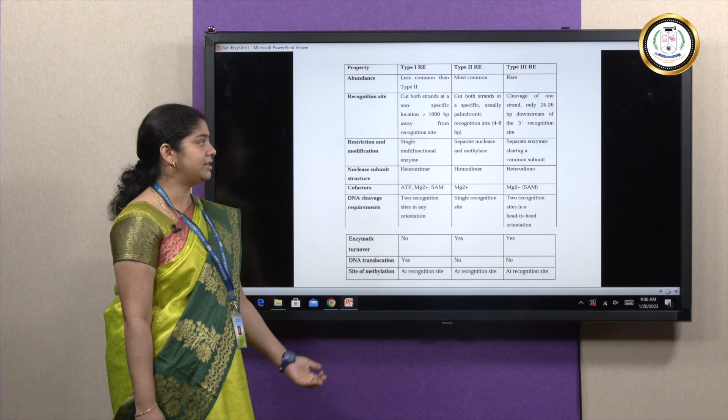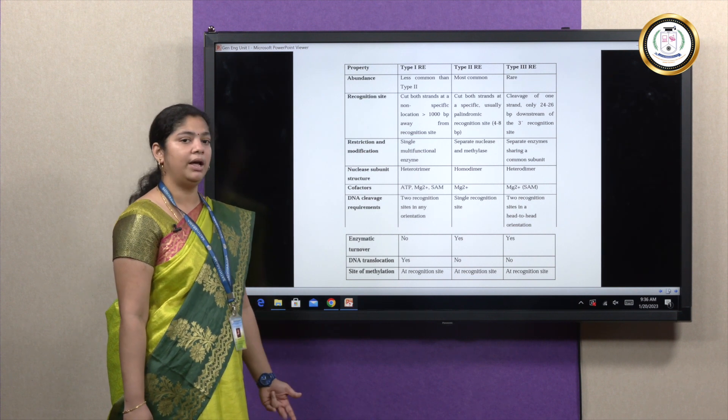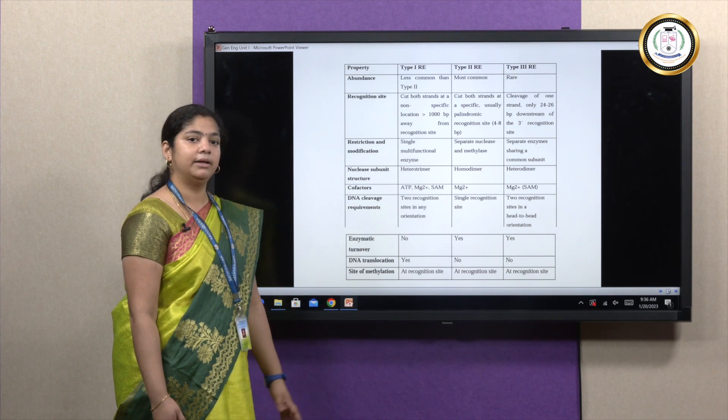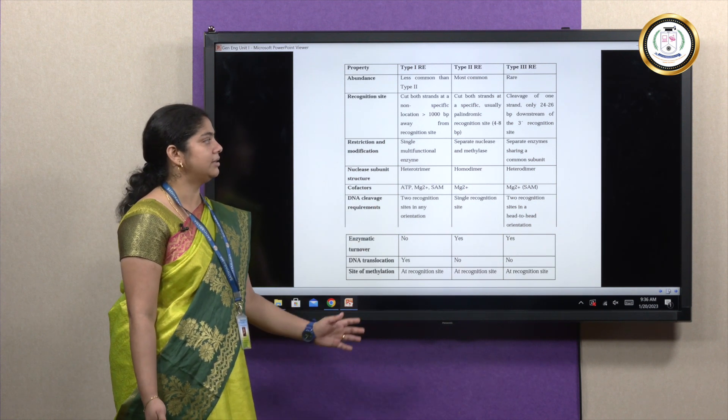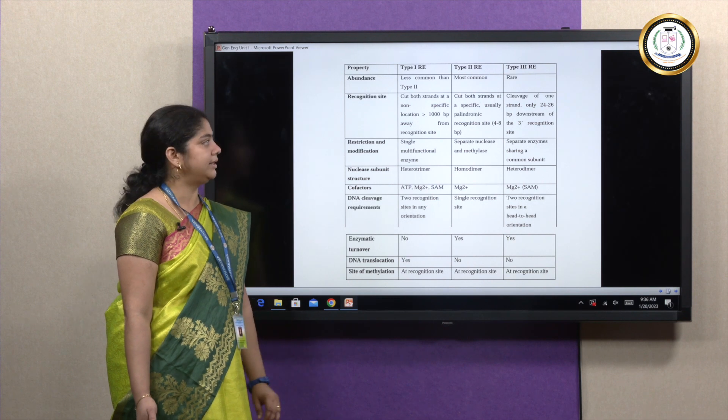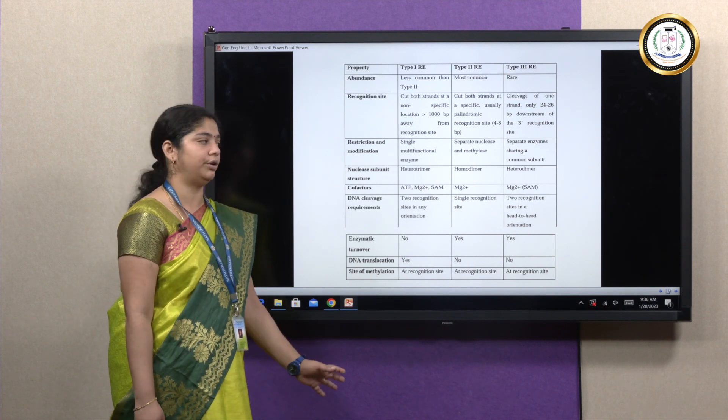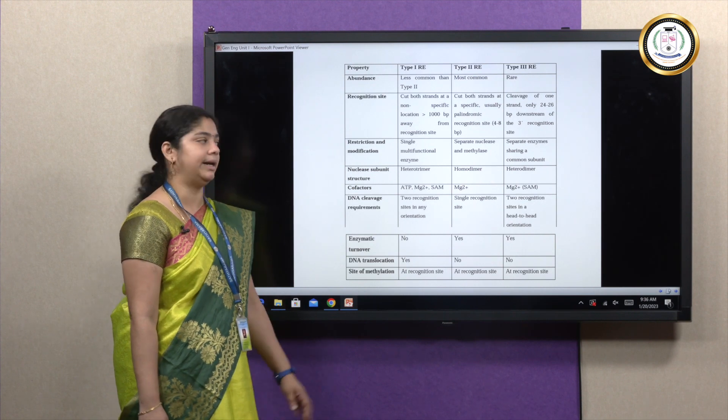Restriction enzyme 3 or type 1 leaves 1000 base pairs ahead or 24 base pairs ahead, respectively. Compared to this, type 2 restriction enzyme is more accurate and specific and is more commonly used for recombinant DNA technique.